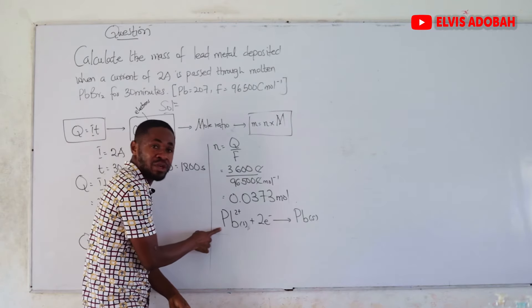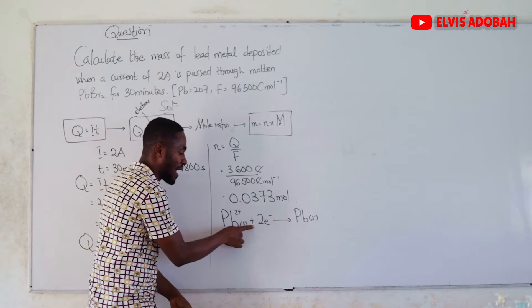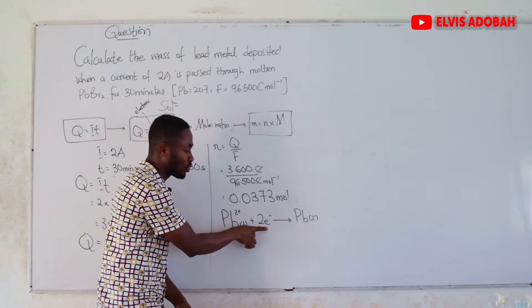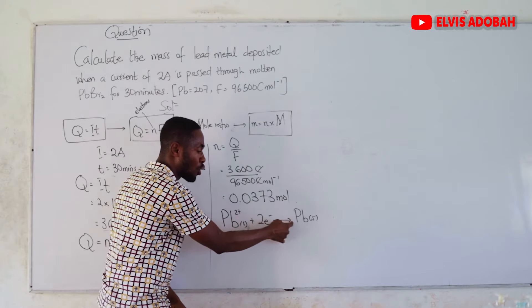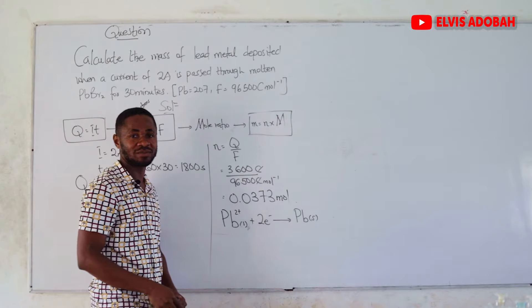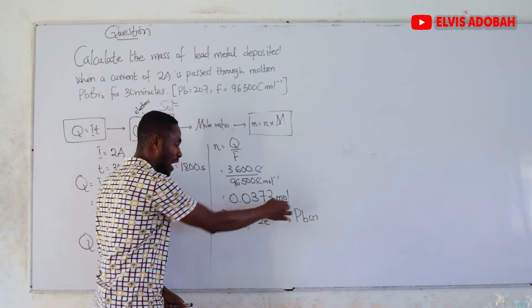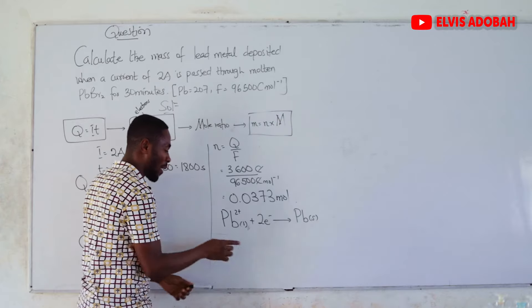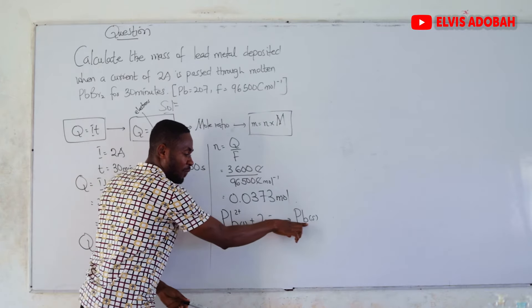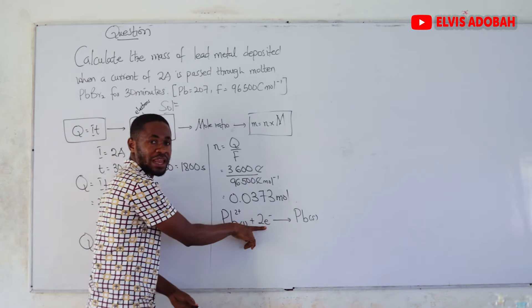Good. This is our equation, our mole ratio. Actually, we read this equation as, there is no number here, so we assume it to be 1. 1 mole of Pb2+ plus 2 moles of electrons going to produce 1 mole of Pb in the solid state.